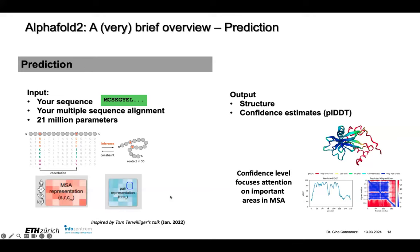Then you do the prediction phase. You put in a sequence — now you don't have the structure, you want it. You put in the 21 million parameters and their values, construct the multiple sequence alignments and co-variation matrix, and output a structure with confidence estimates.